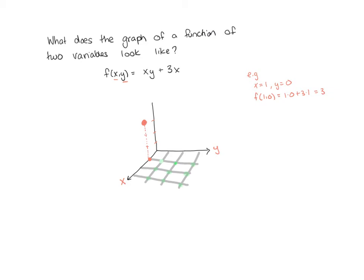Now let's pick x = 2, y = 1. I go to the point (2, 1) in the xy-plane and plug it into my function: f(2, 1) = 2·1 + 3·2 = 2 + 6 = 8. So I have to go up to a function value of 8. That's another point on my graph.